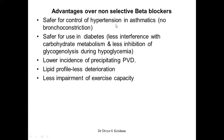You cannot use a non-selective beta blocker in such a patient because if you use it to control the blood pressure, his asthma will get aggravated. So you have to make a rational choice, and the choice in patients who have both hypertension and asthma is to use a cardioselective beta blocker. They are also safer because they do not interfere with carbohydrate metabolism or glycogenolysis during hypoglycemia, as these actions are mediated through beta-2 receptors. Since these drugs do not have much action on beta-2 receptors, they are not interfering with these actions.